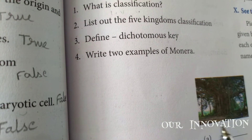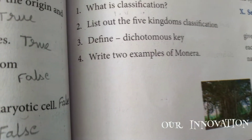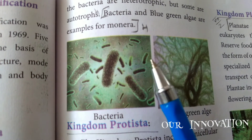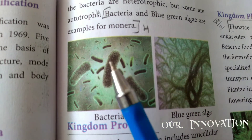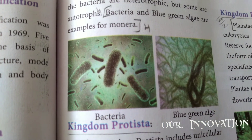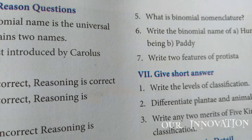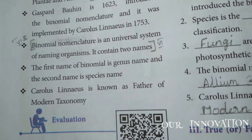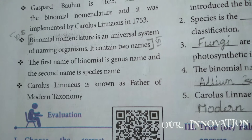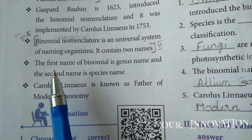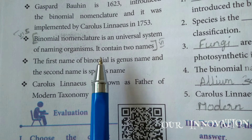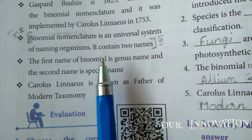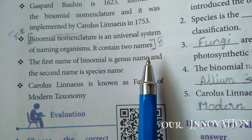Fourth: write two examples of Monera. Page number 81. Bacteria and blue-green algae are examples of Monera. Fifth question: what is binomial nomenclature? Page number 84. Binomial nomenclature is a universal system of naming organisms and it contains two names.